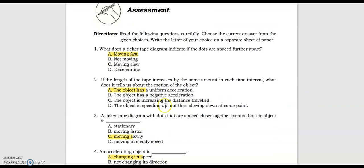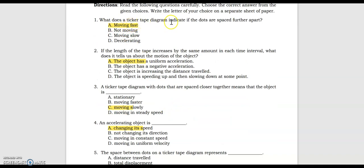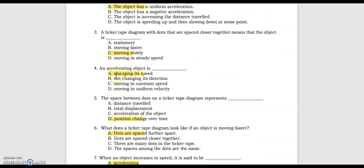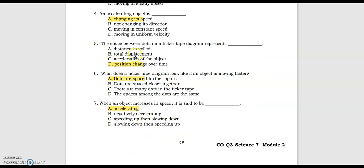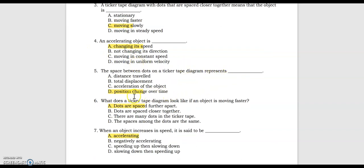For the assessment: Number 1, what does a ticker tape diagram indicate if the dots are spaced farther apart? That means moving fast. Number 2, if the length of the tape increases by the same amount in each time interval, what does it tell us about the motion of the object? The answer is the object has a uniform acceleration. Number 3, a ticker tape diagram with dots spaced closer together means the object is moving slowly. Number 4, an accelerating object is changing its speed. Number 5, the space between dots on a ticker tape represents position change over time, or basically speed. Number 6, what does a ticker tape look like if an object is moving faster? The dots are spaced farther apart.